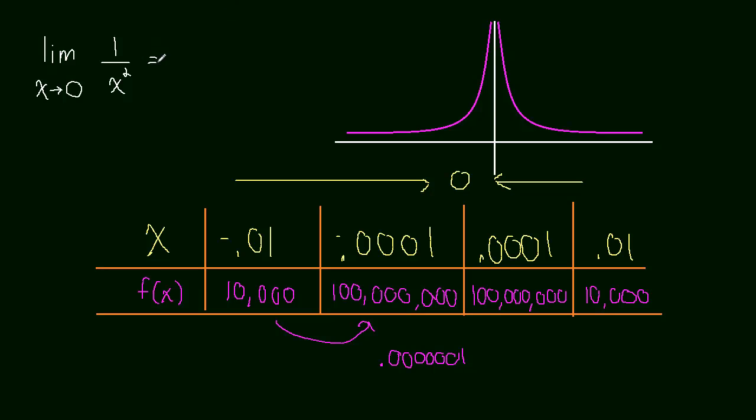So this does not exist because it grows without bound. So I'll write that out: grows without bound. Meaning the closer x gets to zero, the bigger the function gets. Okay, so this is another way that a limit might not exist.